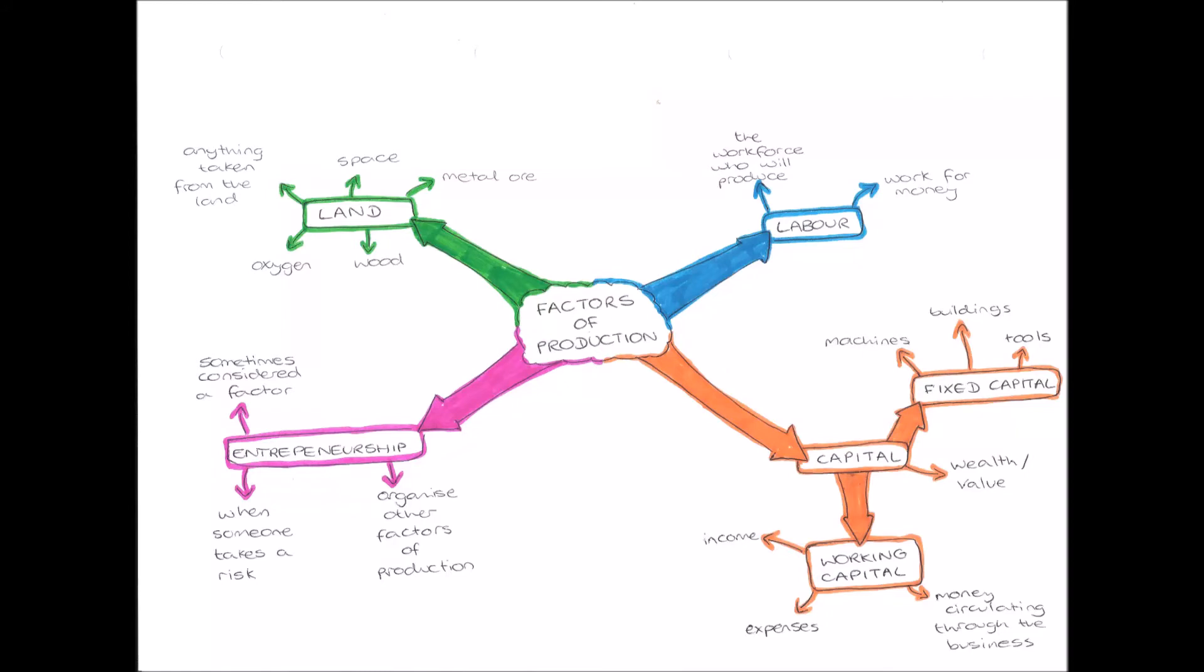Hello everybody and welcome to this microeconomics video on the factors of production. So what are the factors of production? Well, in order to produce any good or provide any service, in order to make anything, we need three things. These three things are our factors of production and they are land, labor, and capital, as you can see on the sheet there.